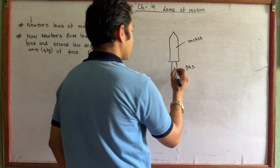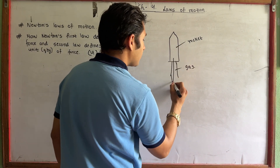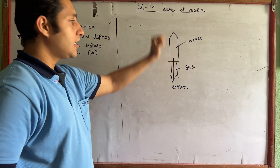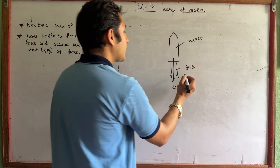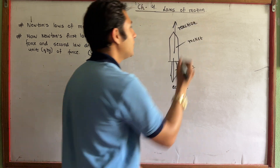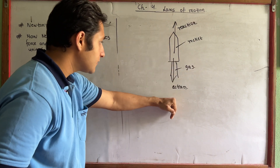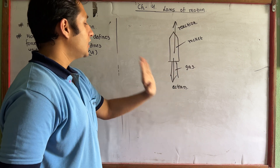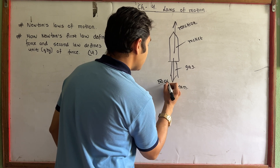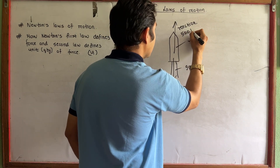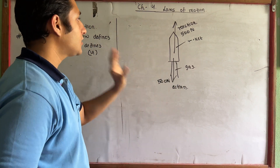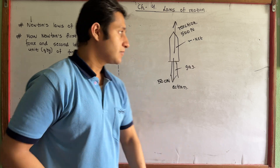The example involves different bodies — a rocket and gas. In a rocket, the gas goes in one direction — that is the action. The rocket goes in the opposite direction — that is the reaction. Every force has an equal and opposite reaction. Equal means action and reaction are equal, say 500 Newtons each, but the direction is opposite — equal and opposite.